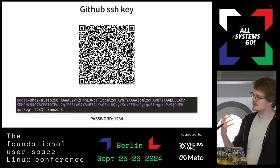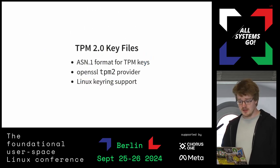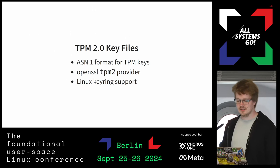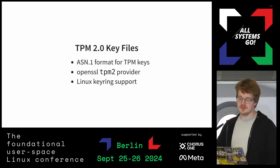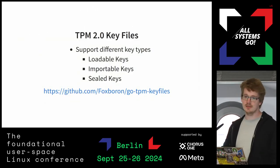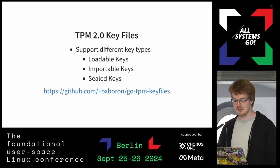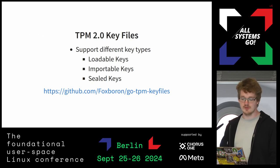What enables these keys is a spec called the TPM 2.0 key files, by James Bottomley. It's a draft, and it's an ASN.1 spec for doing TPM keys. It's quite nice. It's implemented by the Linux keyring and the OpenSSH provider, so you can do key sharing between all these different implementations. It supports loadable keys, importable keys, and sealed keys. I did a nice Go implementation of this, giving you shareable keys for different providers.